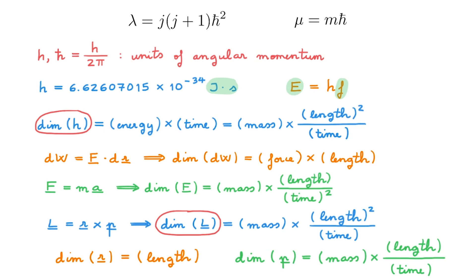Therefore, the fact that the eigenvalue of j squared is proportional to ħ² is consistent with j squared being the square of an angular momentum. And similarly, the fact that the eigenvalue of j3 is proportional to ħ is also consistent with j3 being an angular momentum component.